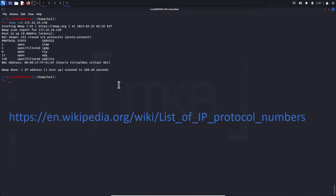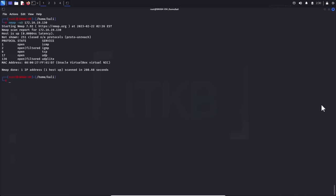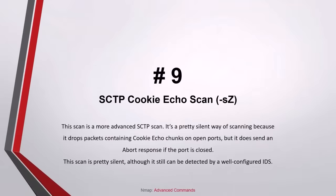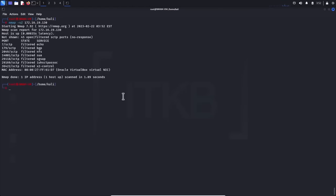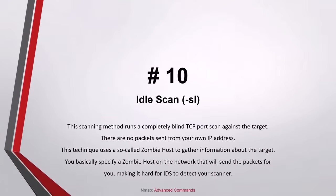Number nine, SCTP cookie echo scan: this is a more advanced SCTP scan. It's a pretty silent way of scanning because it drops packets containing cookie echo chunks on open ports, but sends an abort response if the port is closed. This scan is pretty silent, although it can still be detected by a well-configured IDS. Number ten, idle scan: this scanning method runs a completely blind TCP port scan against the target with no packets sent from your own IP address. This technique uses a so-called zombie host to gather information about the target. You basically specify a zombie host on the network that will send the packet for you, making it hard for IDS to detect your scanner. It's a very stealthy scan because you use another computer's IP address instead of your own.